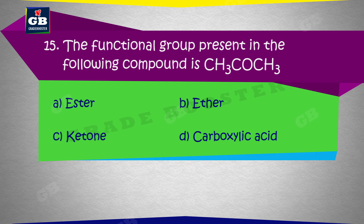The functional group present in the following compound CH3COCH3 — nimn compound CH3COCH3 mein maujud functional group kaun sa hai: a) Ester, b) Ether, c) Ketone, d) Carboxylic acid.